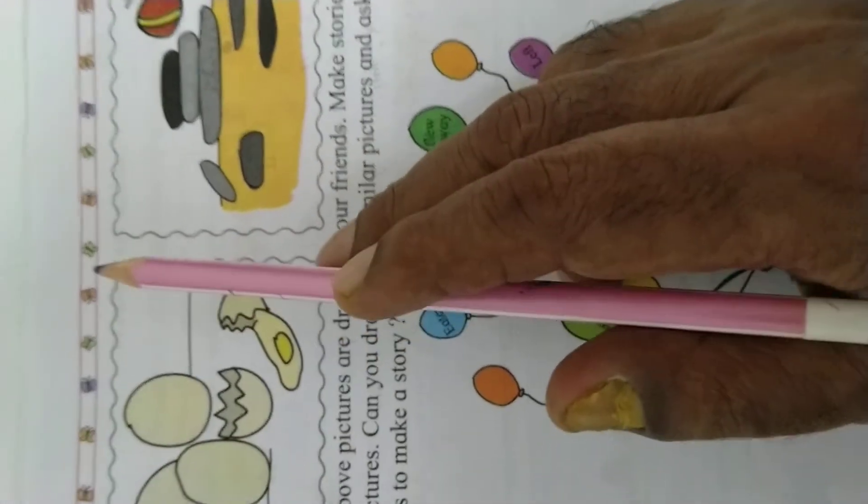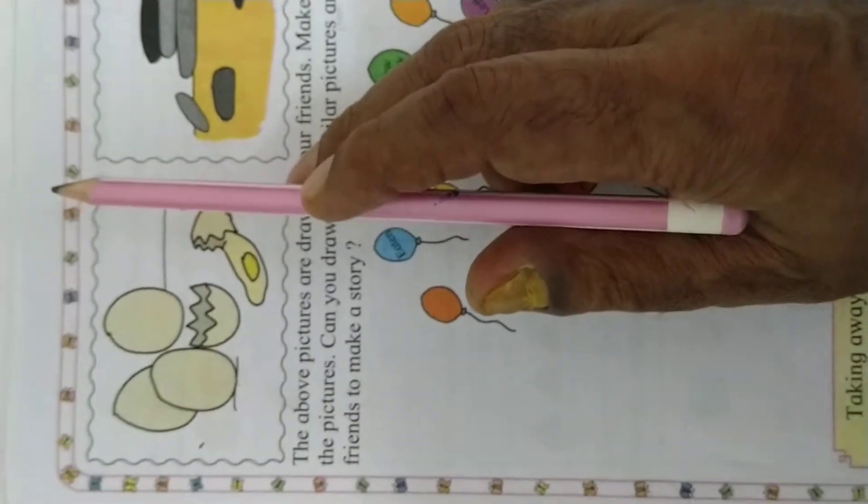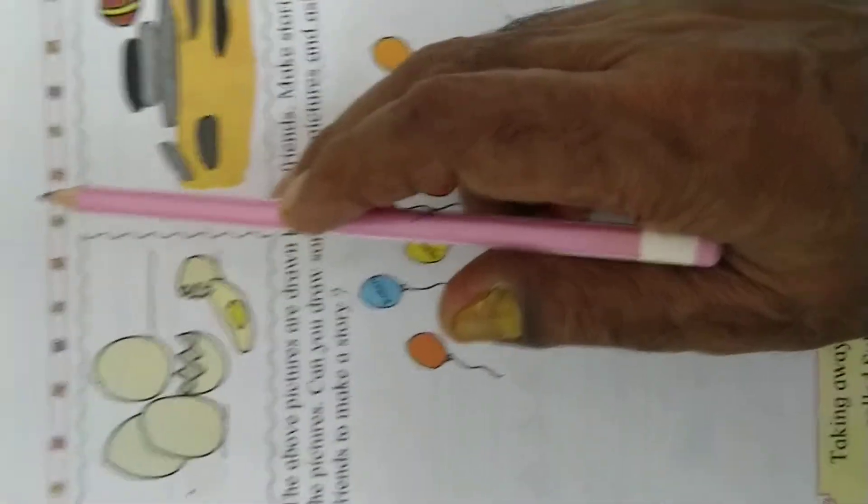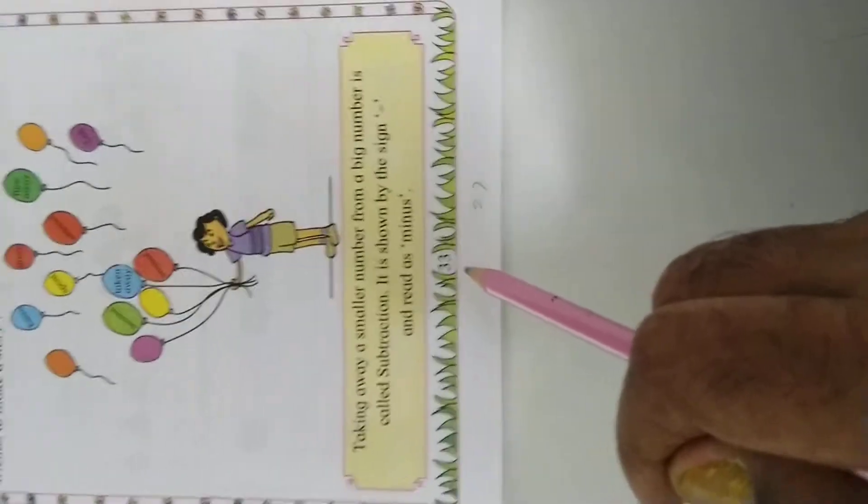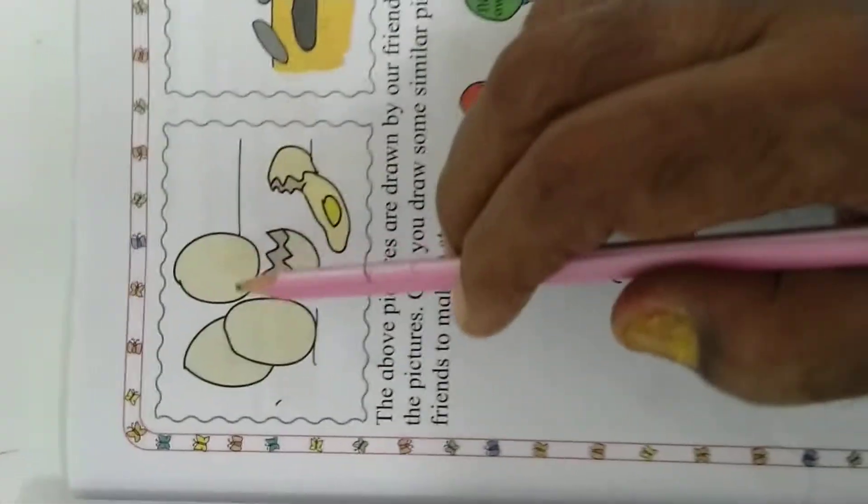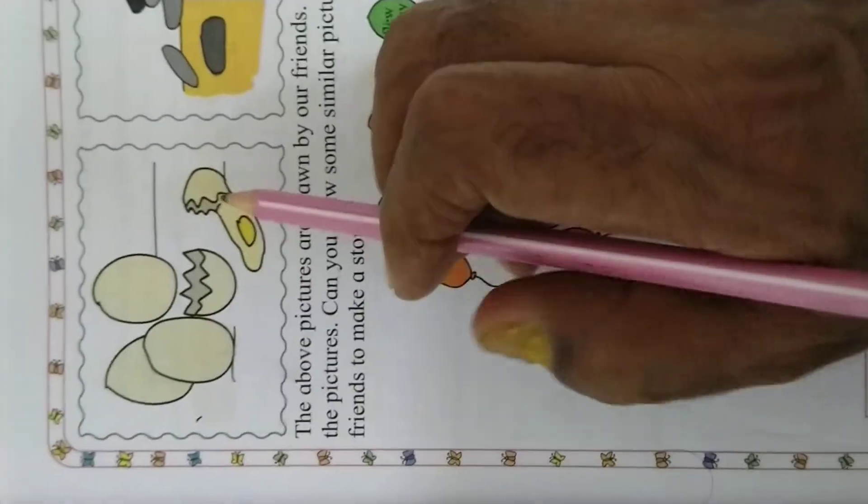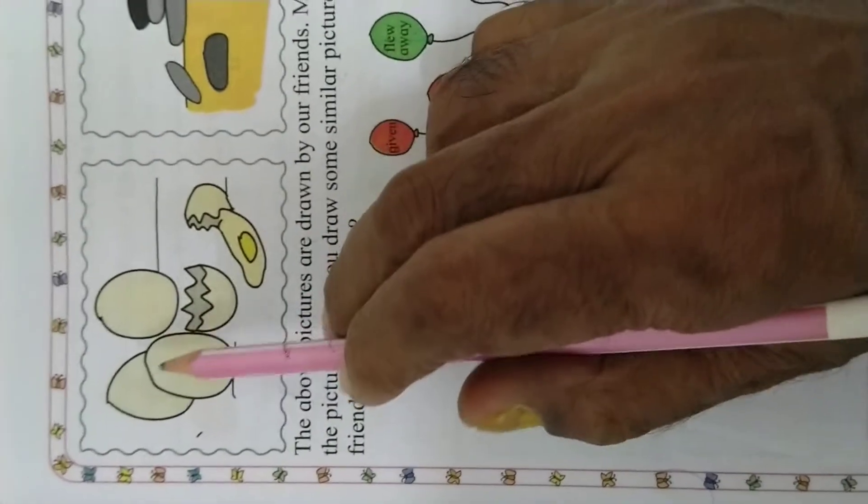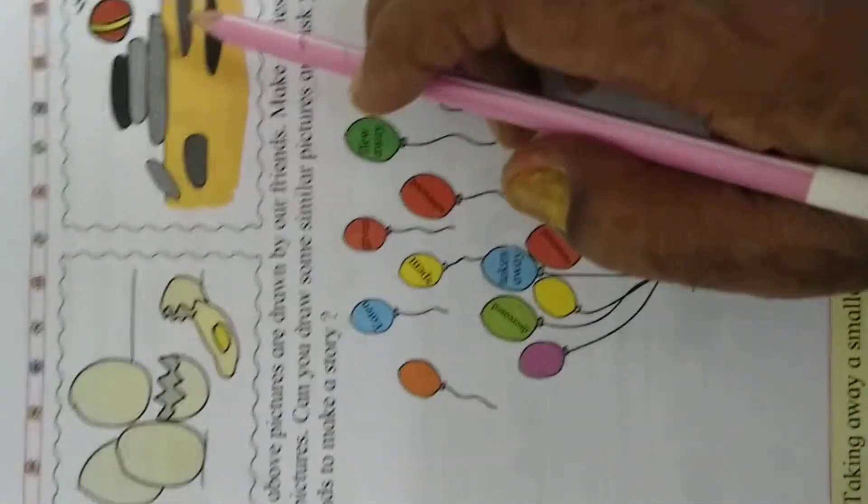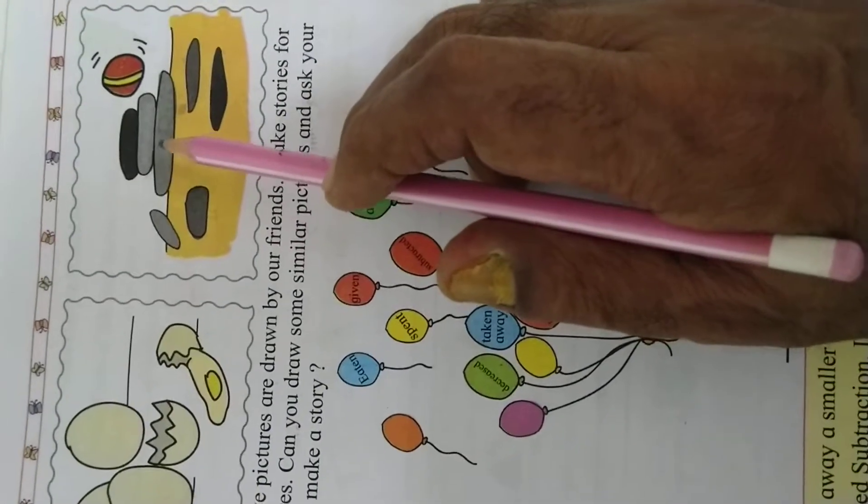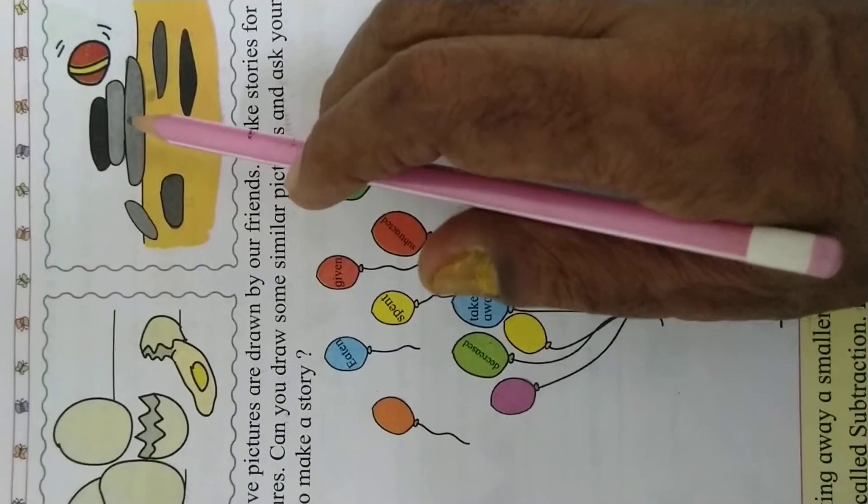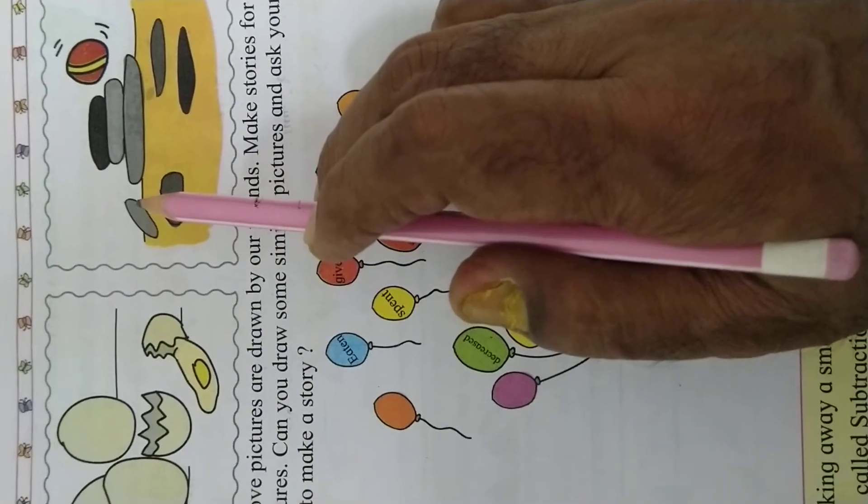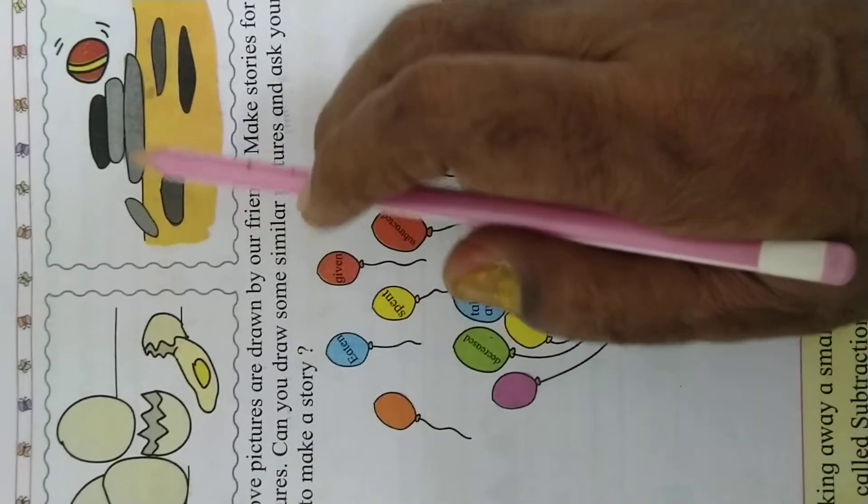See here, we are going to learn for standard one, this page number 33. Here are eggs, one is broken now. Trees here, and these are stones. One is broke, one fell down.